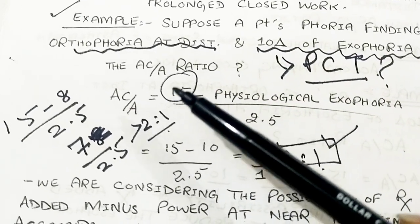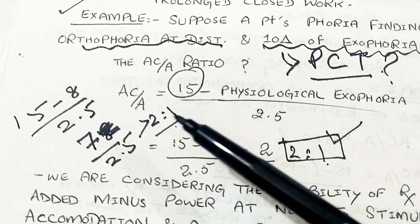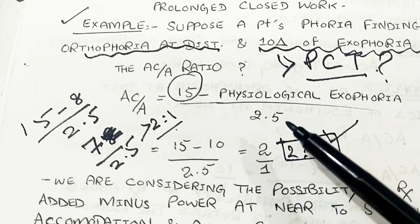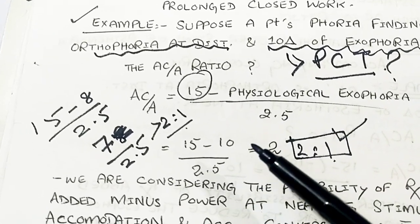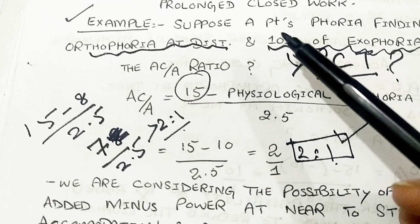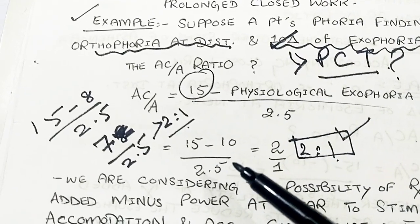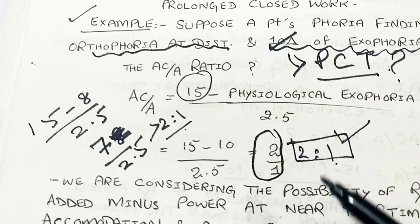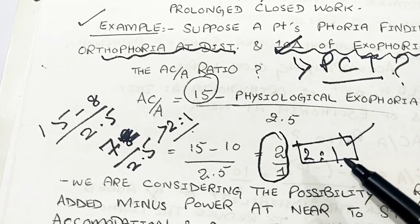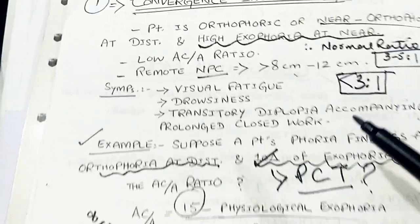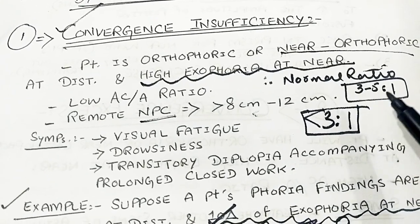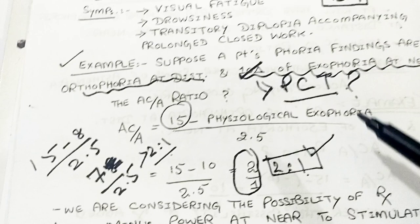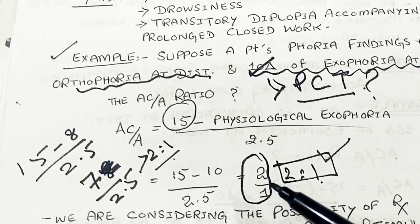Then we find out the AC/A ratio. The formula is: 15 (constant) minus physiological exophoria, divided by 2.5. So: 15 minus 10 prism diopters, divided by 2.5, gives an AC/A ratio of 2 to 1. That is less than the normal 3 to 5 to 1, so the patient has a low AC/A ratio.